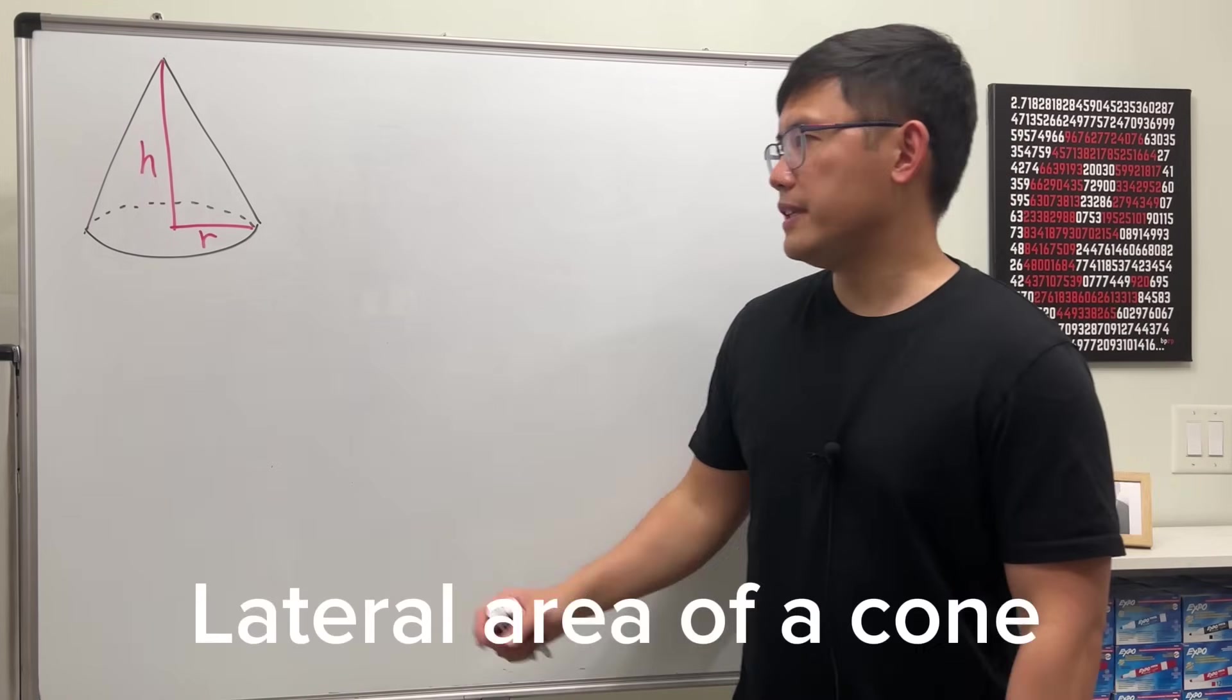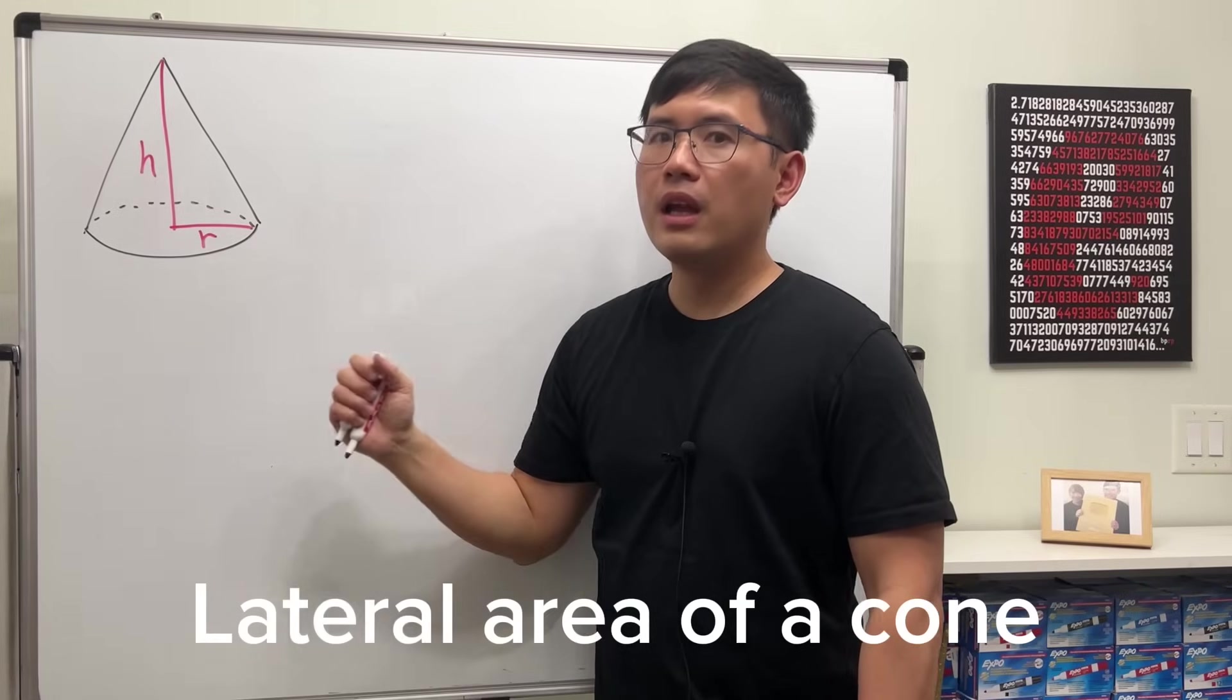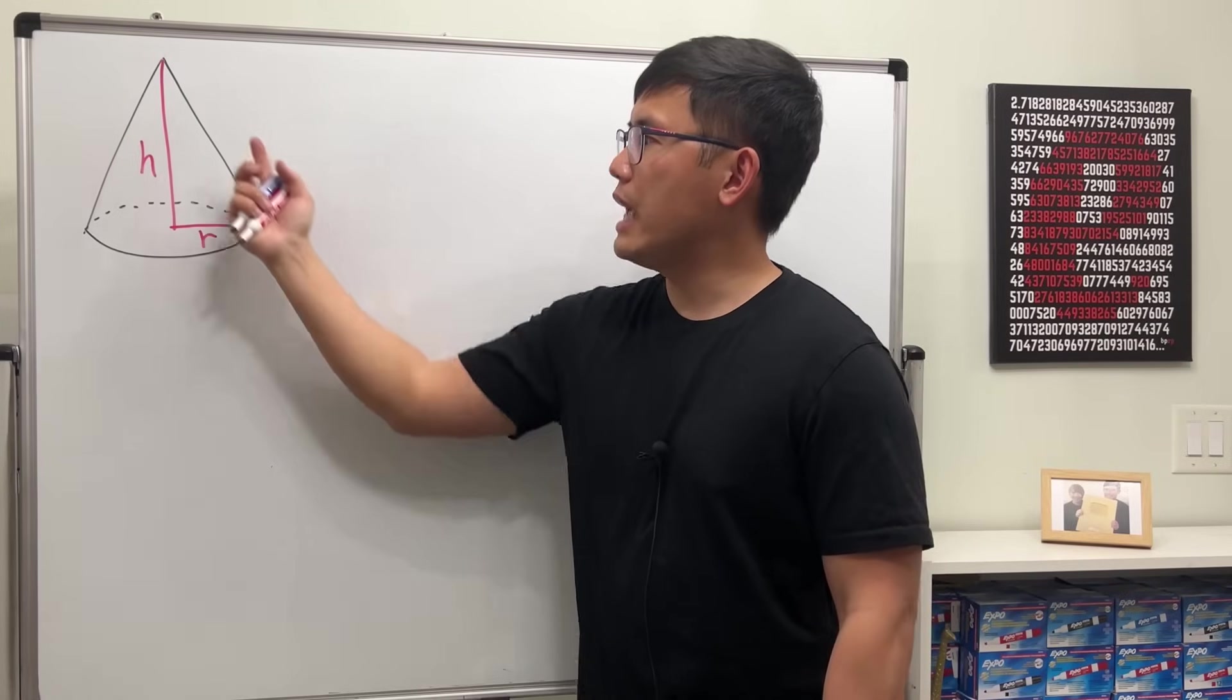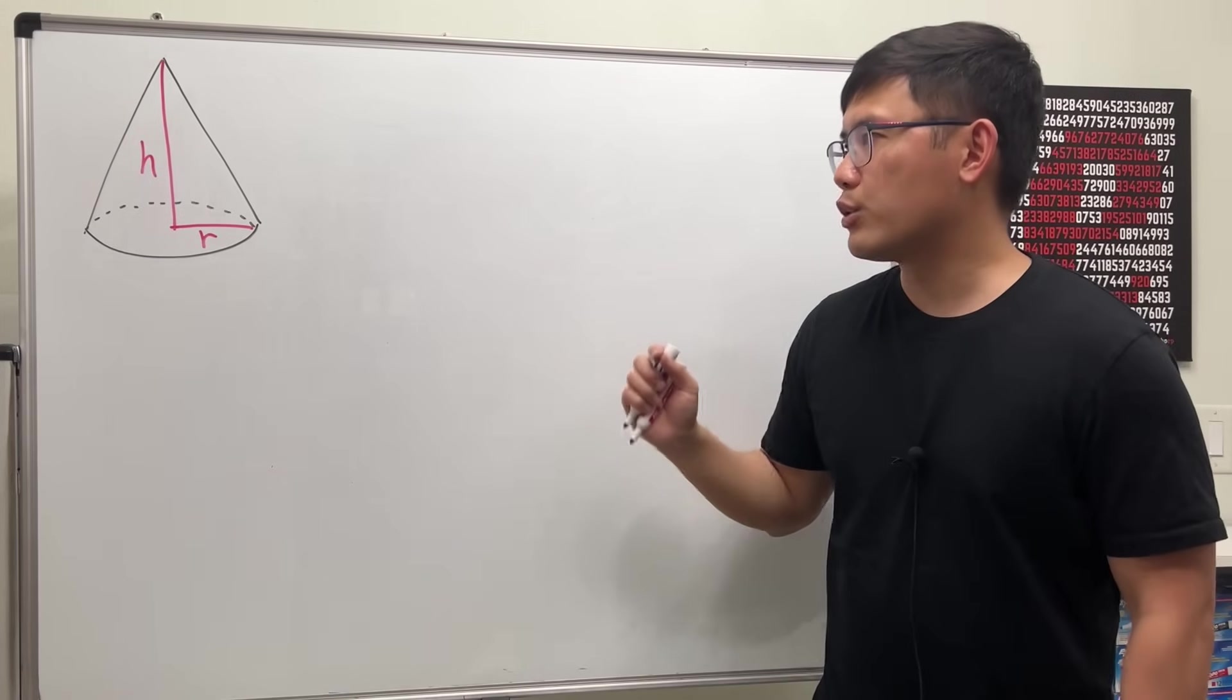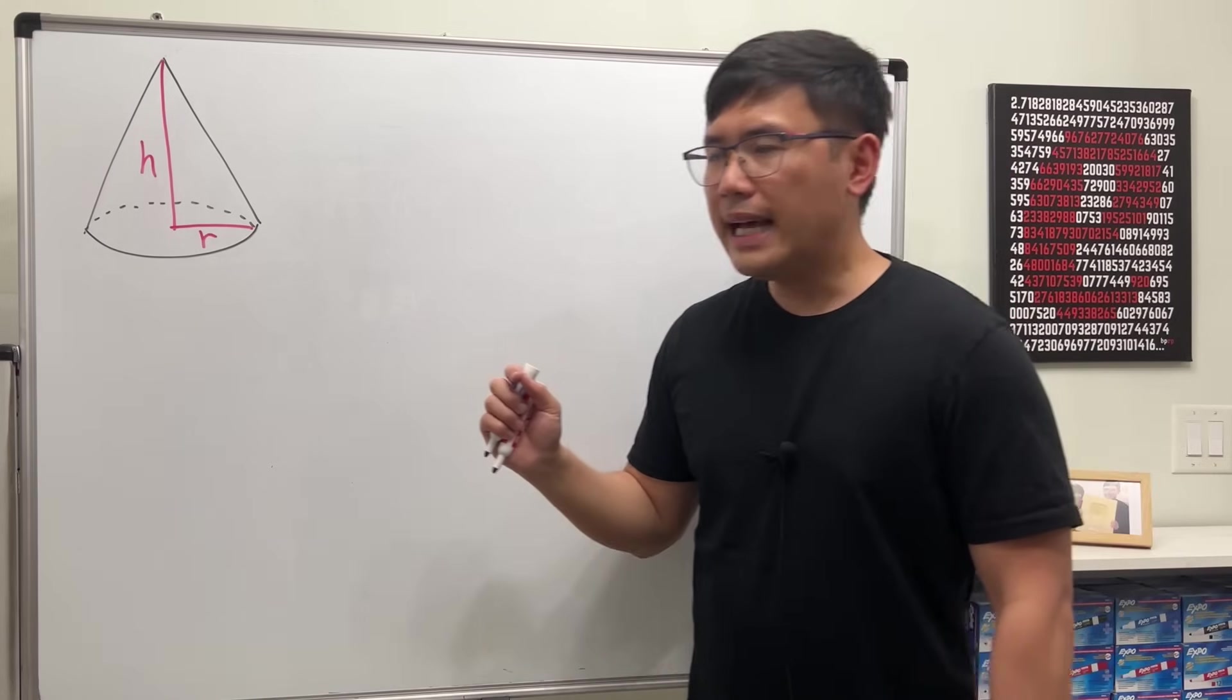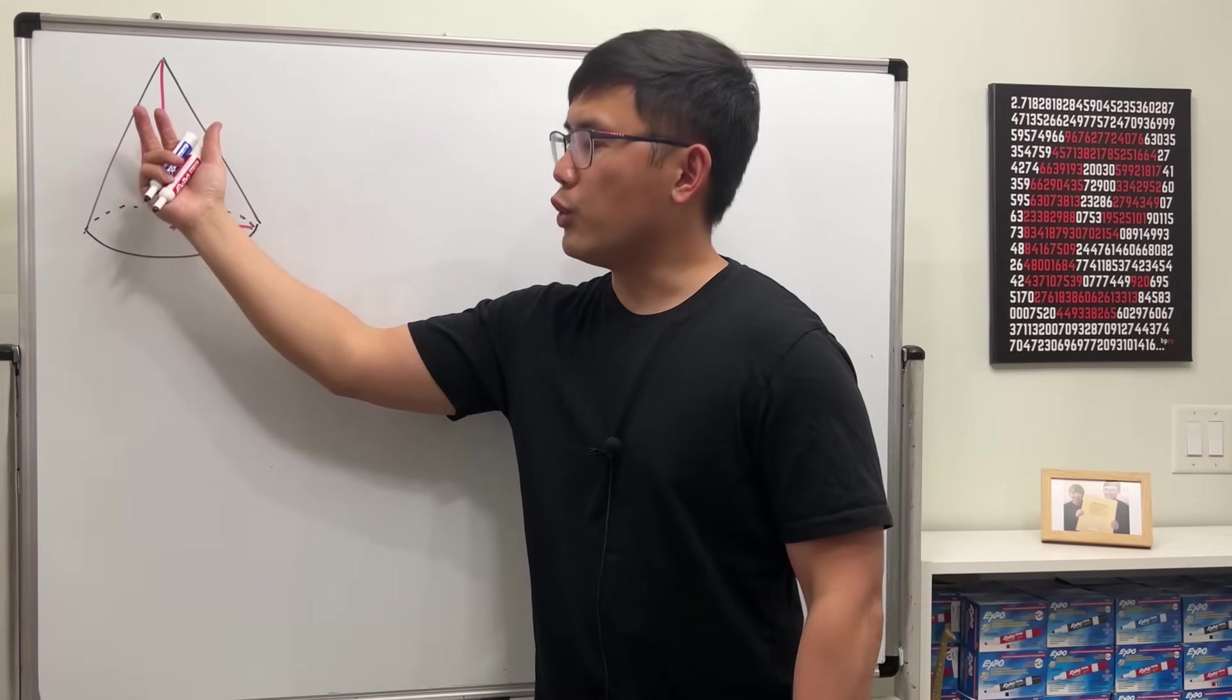Today we are going to derive a formula for the lateral area of a cone. The lateral area is just the area around the cone.